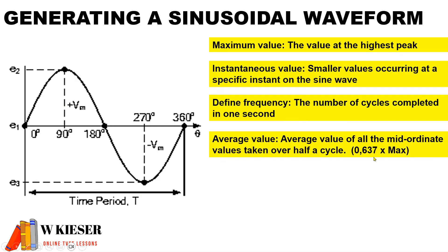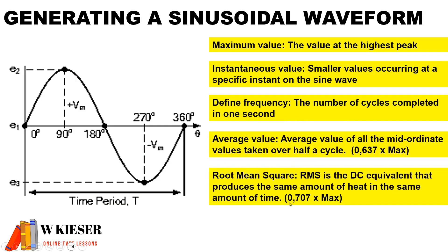The root mean square, abbreviated as RMS, is the DC equivalent that produces the same amount of heat in the same amount of time. To calculate the RMS value, it is 0.707 multiplied by the maximum value. The form factor is defined as the ratio of the RMS value to the average value.